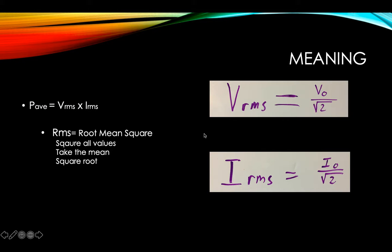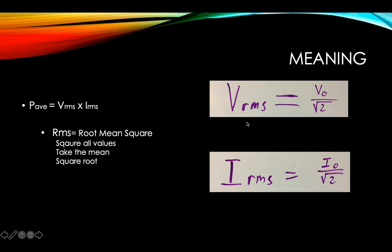If you had a graph of all the voltages over a given time — the measured voltages, because we know those are changing — it would look a lot like a sinusoidal wave. We would take all those values and square them, take the mean of those squared values, and then take the square root. If we did that for all of the measured voltages, that would give us the voltage RMS value.